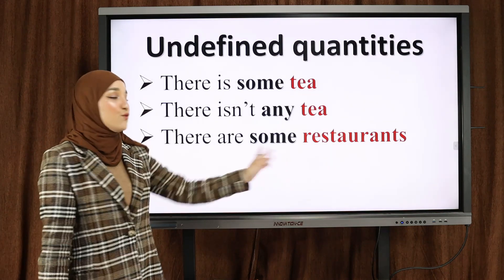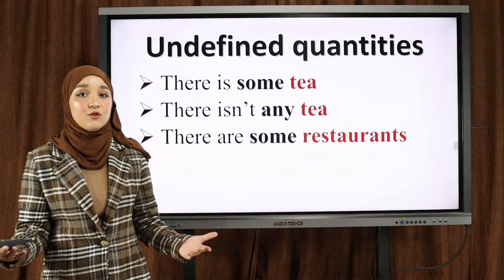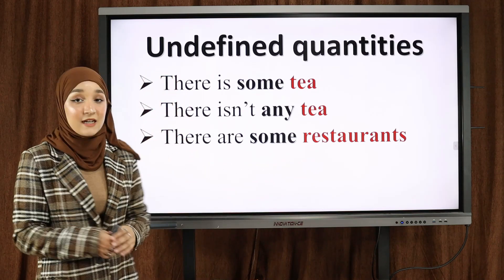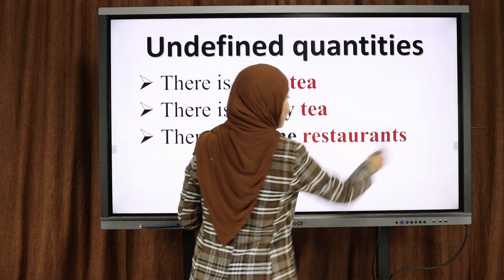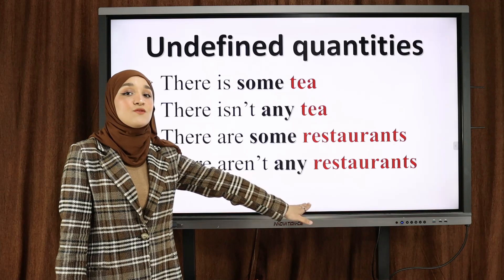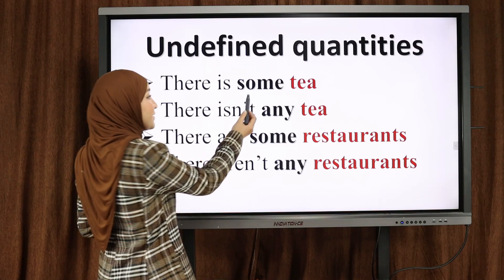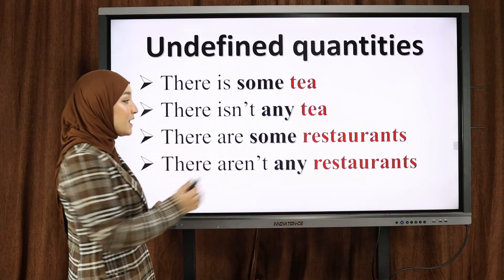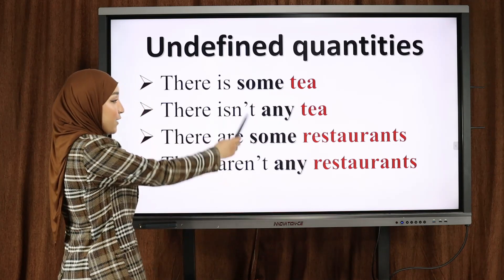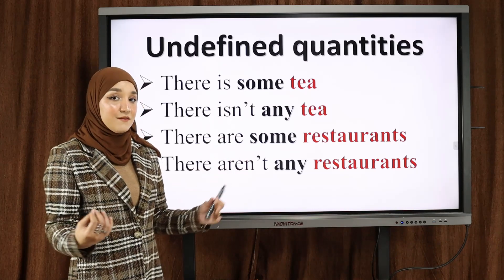'There are some restaurants' — هناك بعض المطاعم. Restaurants here is countable and in the plural — إذا أردنا أن نرجعها في صيغة المفرد نحذف S، فيصبح restaurant. In the negative form: 'There aren't any restaurants' — ليس هناك أي مطعم. Notice we used 'some' in the affirmative — في صيغة الإيجابية فقط, with countable and uncountable. 'Any' is used in the negative form — في صيغة النفي فقط.